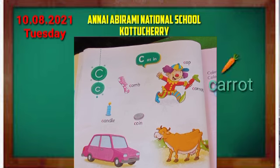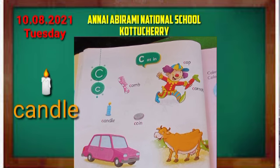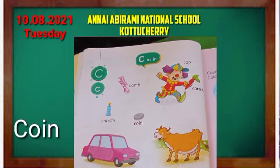Then carrot. C-A-R-R-O-T. Carrot. Then next picture is candle. Candle spelling? C-A-N-D-L-E. Candle. Then coin. C-O-I-N. Coin.